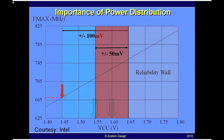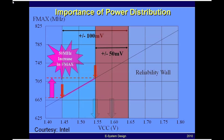On the low side, you have now reduced your voltage from 1.6 to 1.5 volts, which corresponds to an operating frequency of 705 megahertz. Just by changing the power supply noise from 100 millivolts down to 50 millivolts, you have increased the operating frequency from 665 megahertz to roughly 705 megahertz — an increase of 50 megahertz. The case I'm making is that whatever you do on the power distribution network has a direct effect on the operating frequency of the IC, and that is why designing a clean and good power distribution network is extremely critical for high-speed signaling.